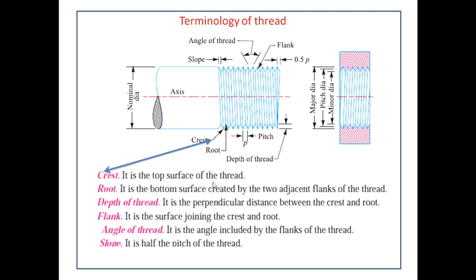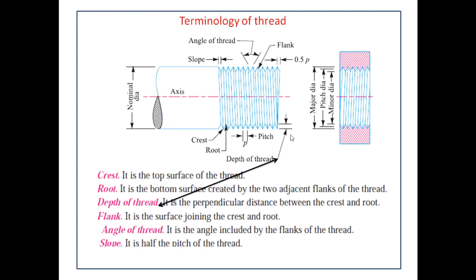Various parameters are present for the thread. The crest is the top surface of the thread — the apex. The root is the bottom surface created by two adjacent flanks of the thread. The inner portion where the minor diameter is present — the bottom surface of the thread — is called the root. The depth of the thread is basically the perpendicular distance between the crest and the root.